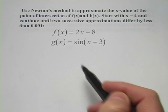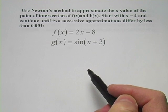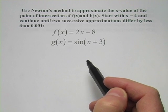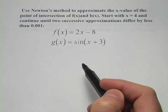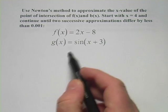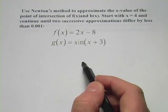You may have already learned how to use Newton's method to find a zero of a function or to approximate the value of a radical. It can also be used to find the point of intersection between two functions.